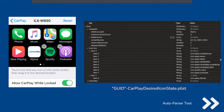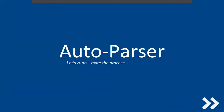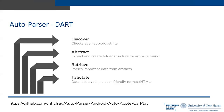Next, we discuss the AutoParser tool. We broke the tool down into four steps called DART: Discover, Abstract, Retrieve, and Tabulate. First it discovers — checking the word list for file paths and files — then extracts and creates the folder structure for the artifacts found, then parses the information within those artifacts, and finally displays it in a user-friendly format.